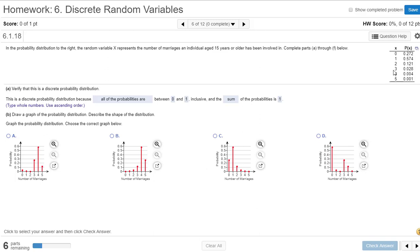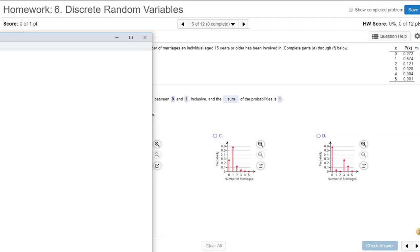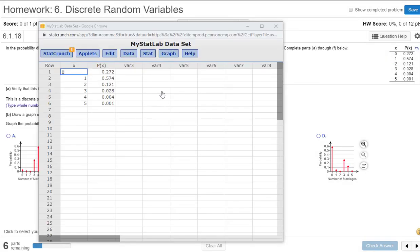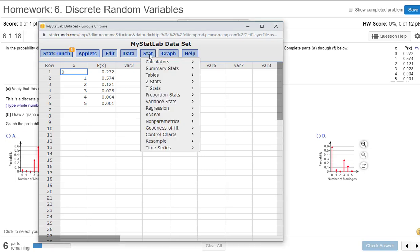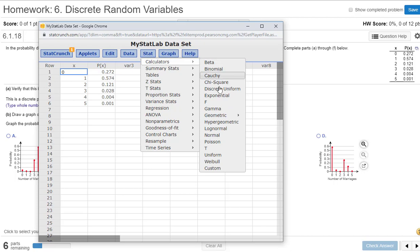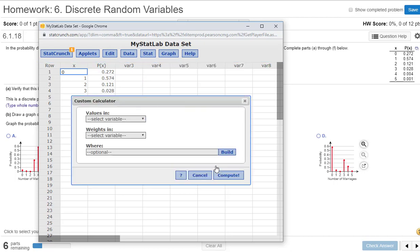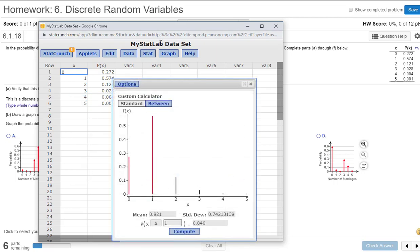Let me show you how to do this on StatCrunch if these get a little bit more involved. So open in StatCrunch. Okay, here it is. We're going to go to Stat, Calculators, and Custom. So our x values are in x, and then these are, in a sense, the weights are in p of x. And then press Compute. And there's our graph.